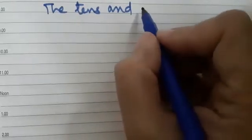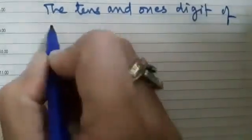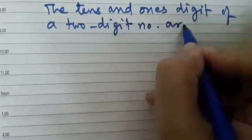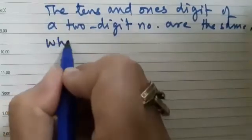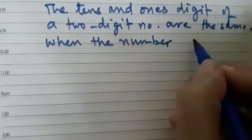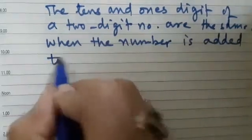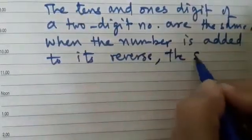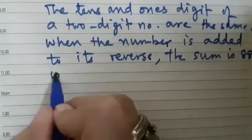The tens and the ones digit of a two digit number are the same. When the number is added to its reverse, the sum is 88. Such an interesting question. What is the number?